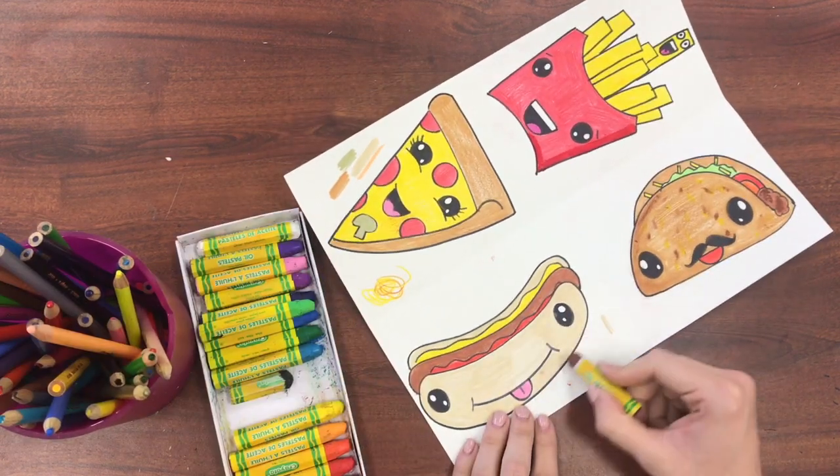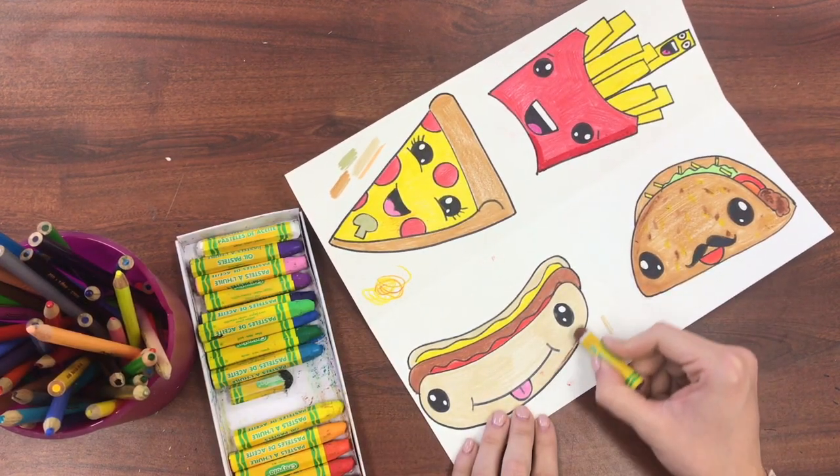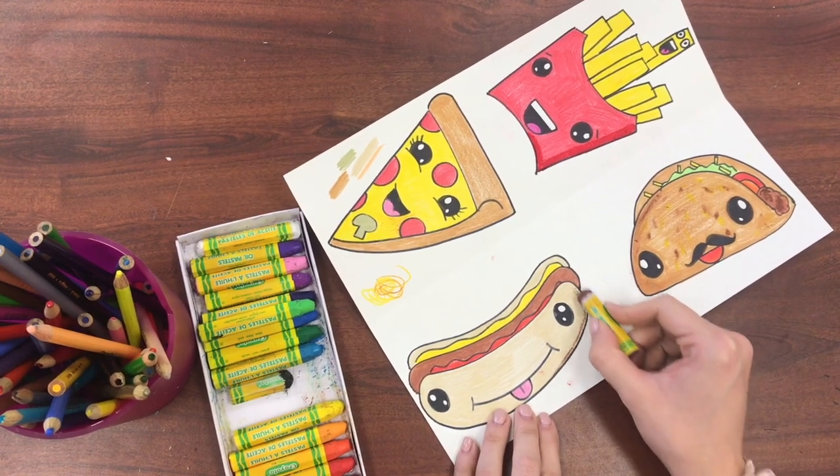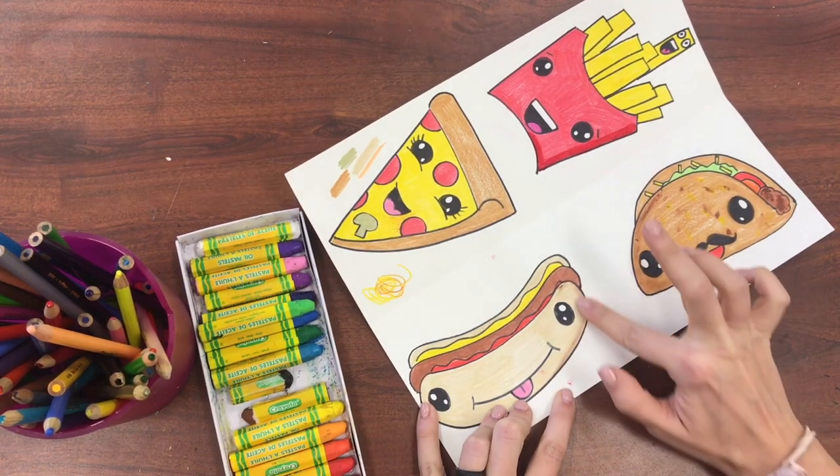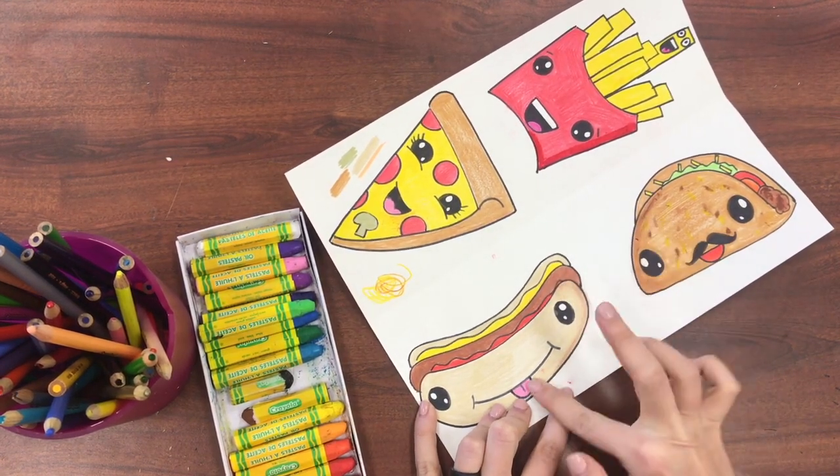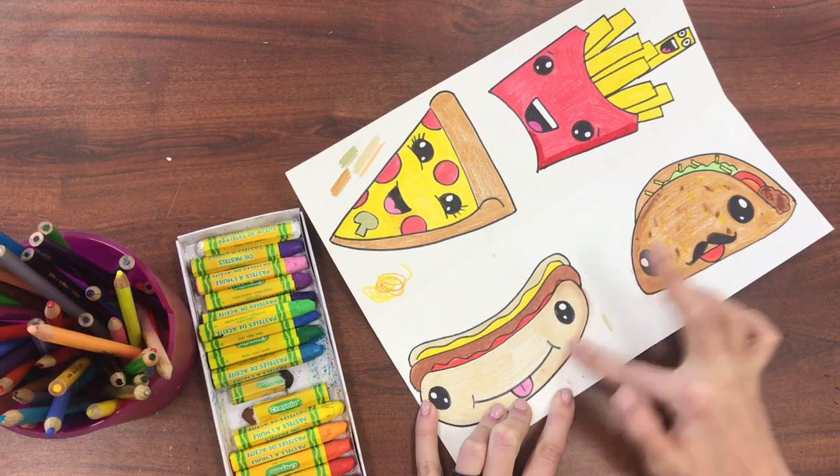I'm going to add some oil pastel to the sides of my hot dog and maybe a little bit on my actual hot dog just to give it some dimension to make it look 3D and then I'm going to take my finger and blend that oil pastel in.